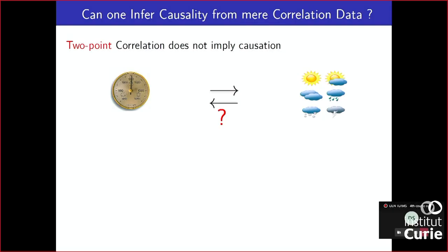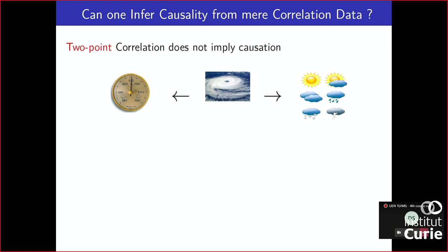We know that there is a common cause — some atmospheric depression. The barometer simply responds faster to this depression than the weather, which takes some time to arrive. The surprise is that when you go beyond two points — three or more — you can actually find the signature of causality in purely observational data.